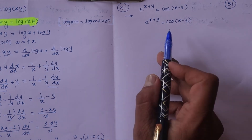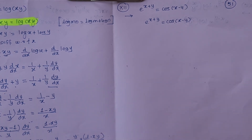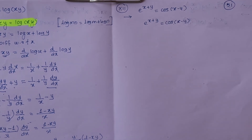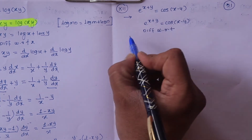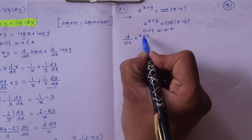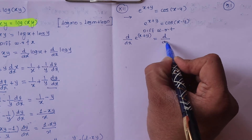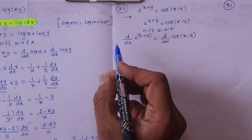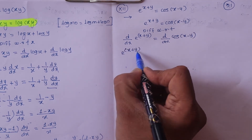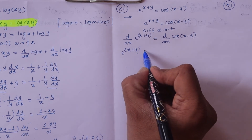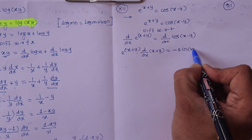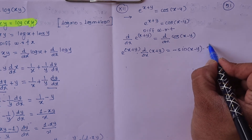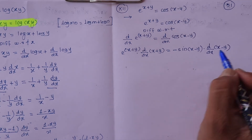Next example: e raised to (x plus y) equals cos(x minus y). We don't need logarithm here, so we take the derivative directly. Differentiating with respect to x: e raised to f(x) times the derivative of f(x). On the right side, minus sin(x minus y) times the derivative of (x minus y).